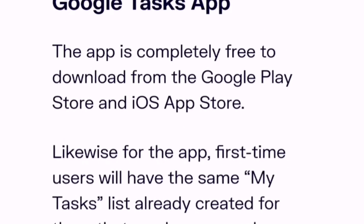The Google Tasks app is completely free to download from the Google Play Store and iOS App Store. First-time users will have the same 'My Tasks' list already created, which can be renamed. Navigating around the mobile and desktop version is pretty much the same — the only difference is that the overflow menu on the mobile app is located at the bottom.